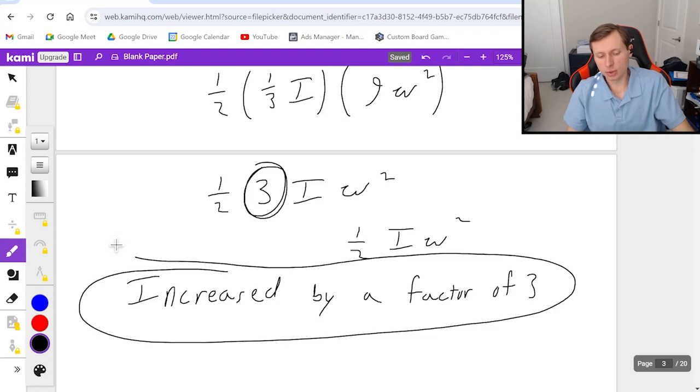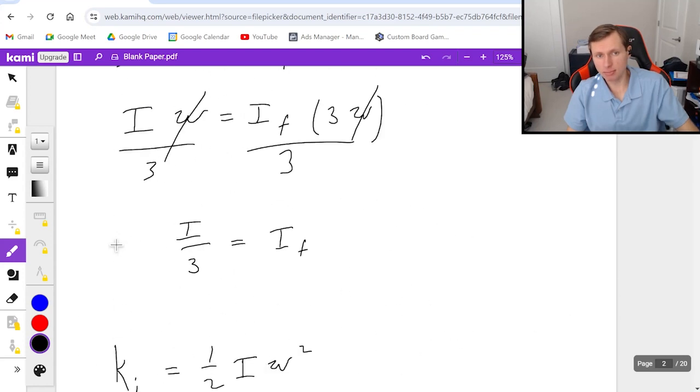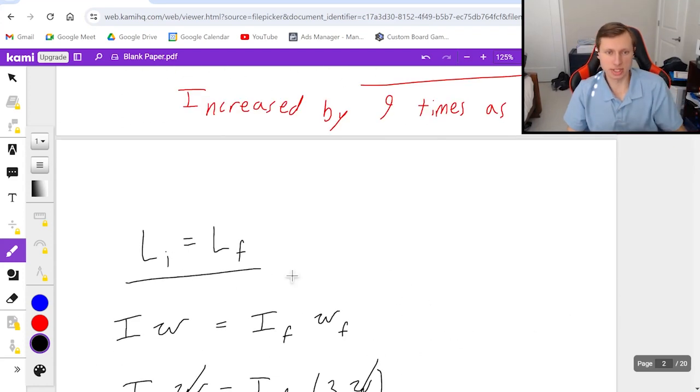There's a few different ways you can see it on a test, quiz, or homework problem. But if you see any problems like this that it's asking for a change in rotational kinetic energy just know that you probably have to start out by using L initial equals L final the conservation of angular momentum.